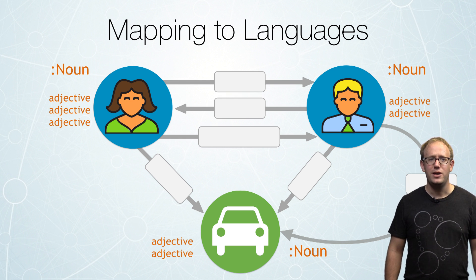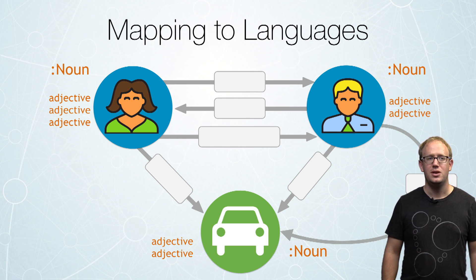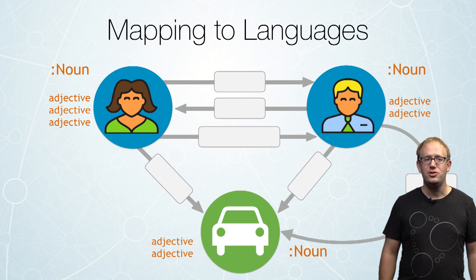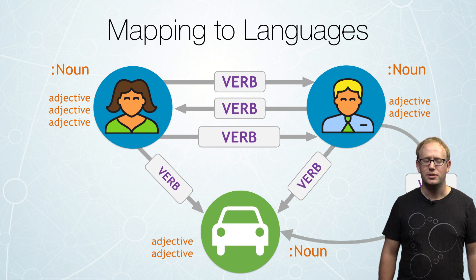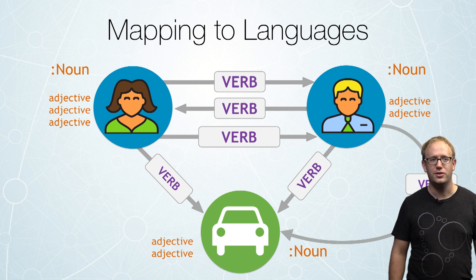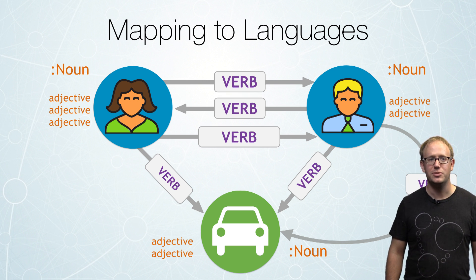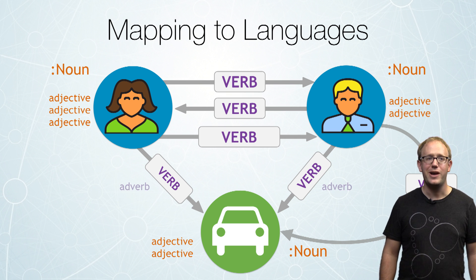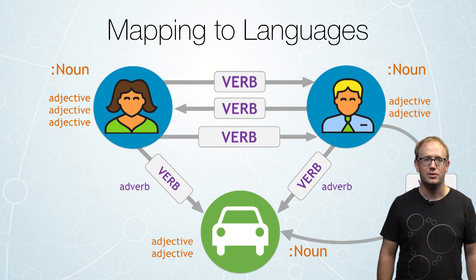And then we have our relationships — those relationships are our verbs. And then we have the properties on the relationships, and those are our adverbs.